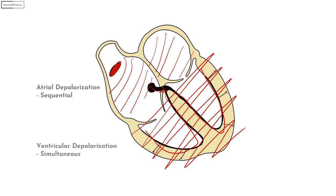The third concept is how the velocity of impulse conduction differs across different tissue types. The His-Purkinje system is specialized for conducting impulses and transmits them at the fastest rates. In contrast, myocardial tissue is specialized for contraction but can also transmit impulses at a much lower rate. When ventricular depolarization occurs through the conduction system, the QRS will be narrow. Whereas when it occurs through the myocardium, the QRS will be much wider as it takes more time.